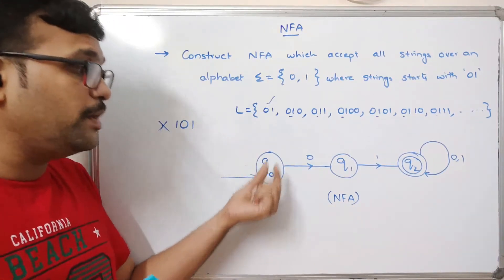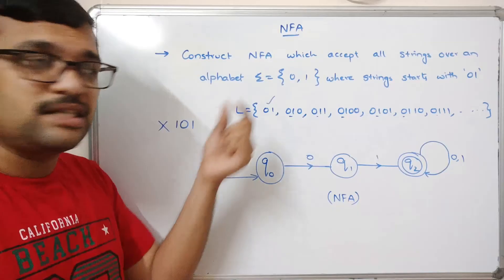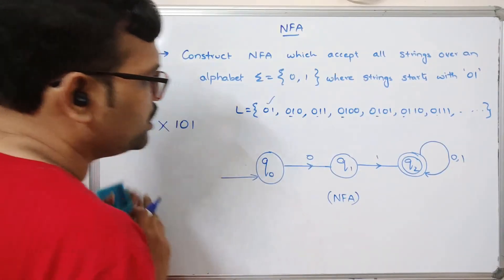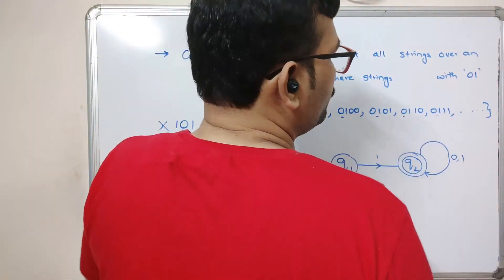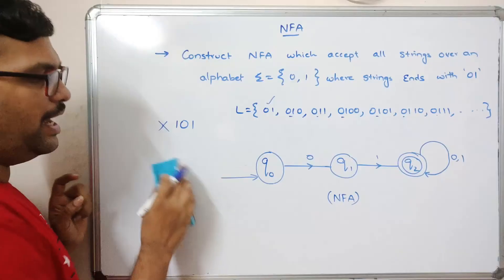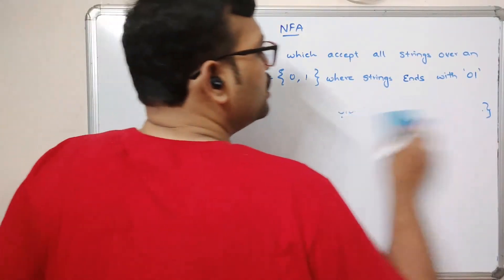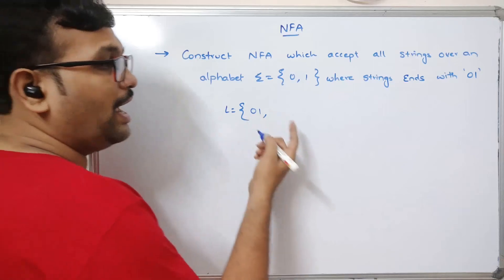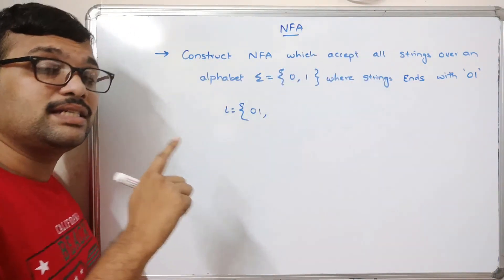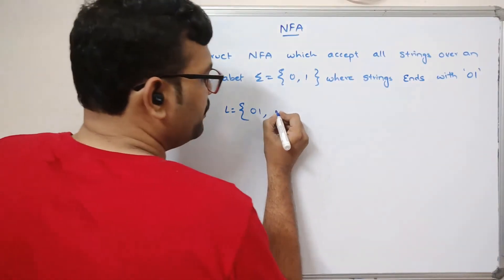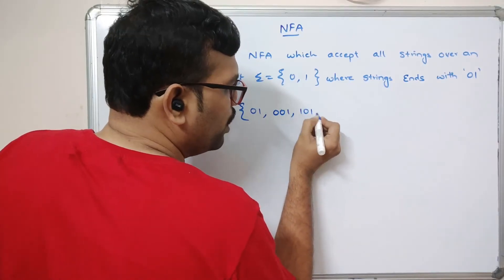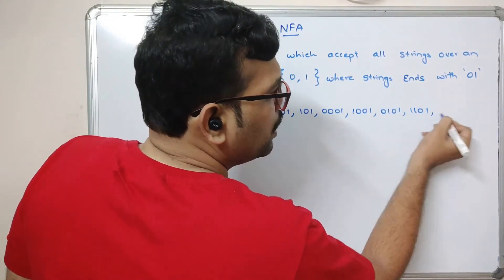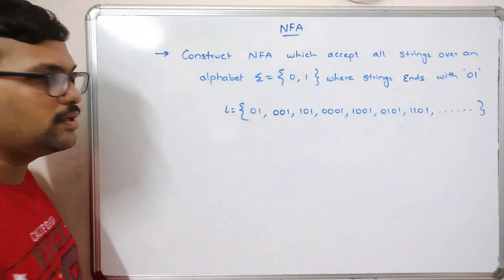One more example: construct an NFA for strings that end with '01'. Let us write the language first. L equals strings ending with '01': 01, 001, 101, 0001, 1001, 0101, 1101, and so on. The strings can start with any number of ones and zeros. This is also an infinite language.